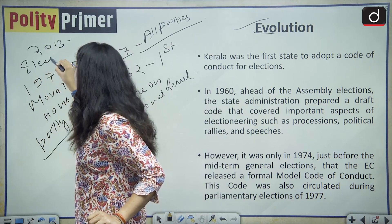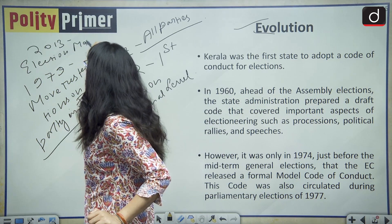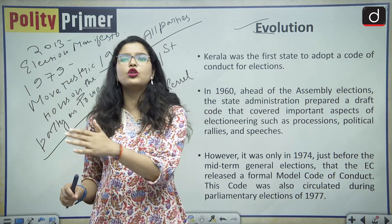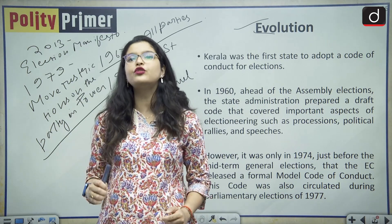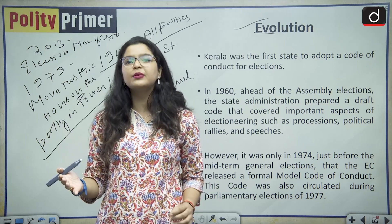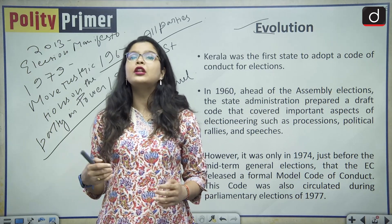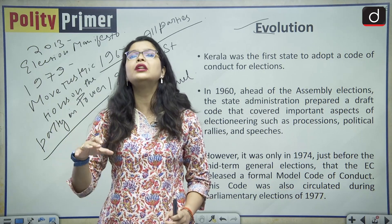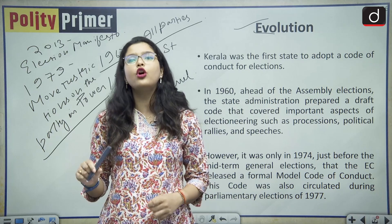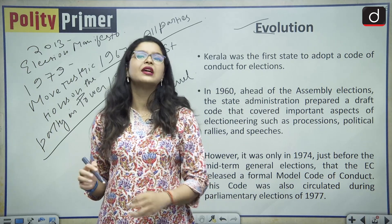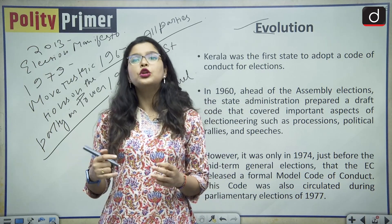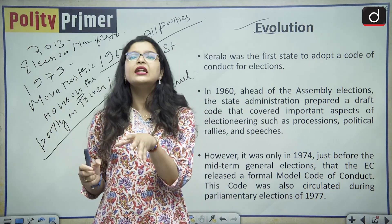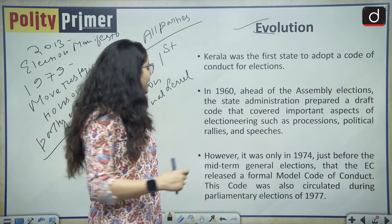In 2013, restrictions were placed on election manifestos by political parties. The Supreme Court ruled that parties cannot promise anything in their election manifesto that violates the Constitution or its fundamental principles. You cannot make false promises to lure voters — the election manifesto must be a genuine document containing only achievable commitments. Sadly, most political parties promise huge things in their manifestos, which are often overhyped.